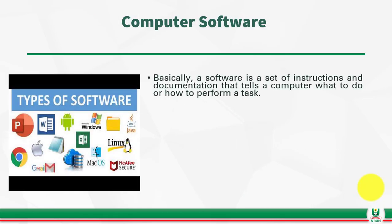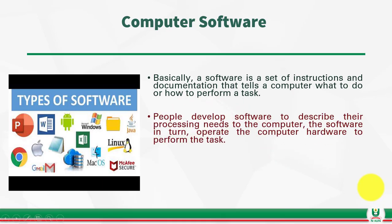Let's look at computer software. Basically, a software is a set of instructions and documentation that tells a computer what to do at a particular point and how to perform a specific task. Software is usually installed into the computer storage like the hard drive to give commands to the hardware to perform specific tasks. People develop software to describe their processing needs to the computer.